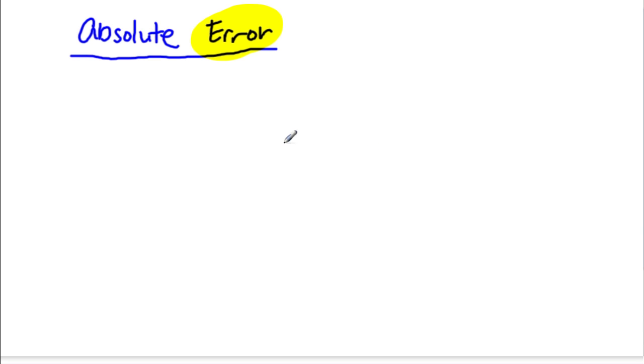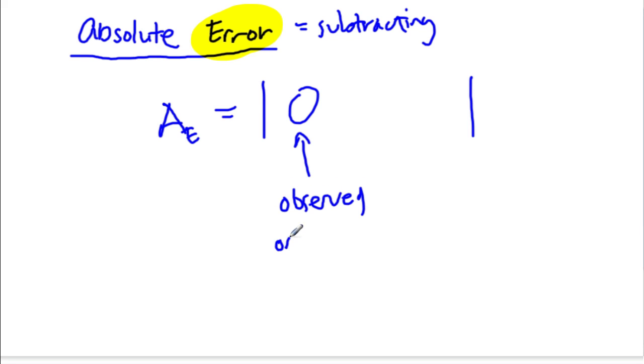Now, absolute error is the first step, and you can abbreviate it. A little e is absolute error. And the word absolute, just like absolute value, we're dealing with absolute value. So what we're really doing here is we're subtracting. And what we're trying to find is the difference between what you observed, O, it's observed or measured, so what you found, minus the actual or the correct result.